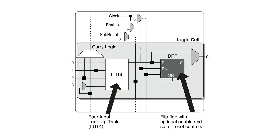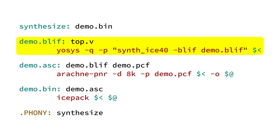Inside the ICE40, the fundamental unit is the logic cell. Each logic cell contains a four-input binary lookup table with a single output and a one-bit flip-flop. Yosys transforms our Verilog into a design fundamentally built out of these units, and once the transformation is complete it emits the output into a BLIF file.